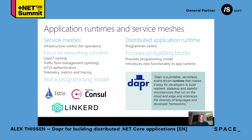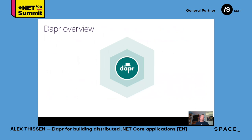DAPR as a distributed application runtime focuses on developers. It provides a programming model to interact with the building blocks it offers. Those building blocks add new functionality to your application runtime, such as interacting with Twitter or SignalR, storing data, and publish/subscribe structures — without having to know all the details of the building blocks themselves. DAPR itself is written in Go, but you can program in a bunch of languages and frameworks including .NET Core, Java, Python, and C++.